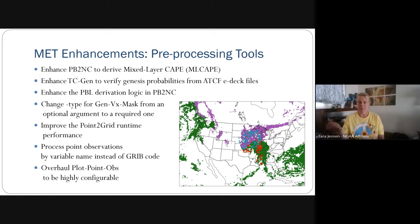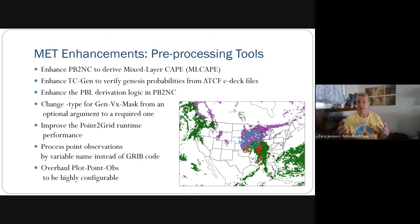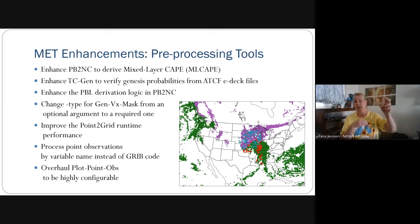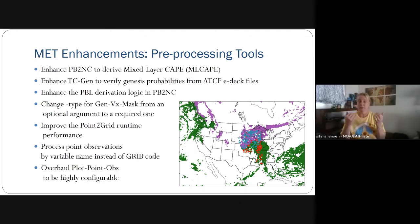Now, we've always had the ability to specify a different name for the forecast field versus the observation field. Now it's no longer tied to GRIB code — the observation name can be called XYZ if that's what you want to call it. John HG, am I representing this properly or did I miss something?